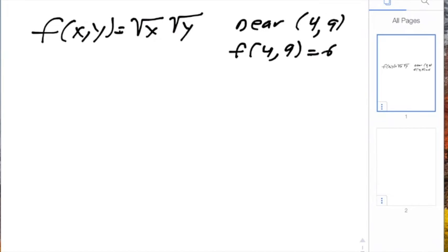One of the nice things about this function is it's easy to compute the partial derivatives. The partial with respect to x of f(x,y) is going to be the square root of y over 2 times the square root of x, and at our particular point that turns into 3 fourths.